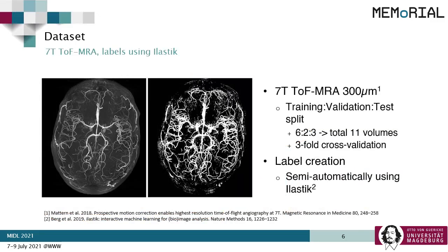For validating this approach, we used a 7-Tesla TOF dataset consisting of 11 volumes with 300 micrometer isotropic resolution. Six volumes were used for training, two for validation, and three for testing. Three-fold cross-validation was used to evaluate the generalizability of the model. Labels for this dataset were created in a semi-automatic fashion using Elastix, which resulted in noisy annotations as can be seen here.